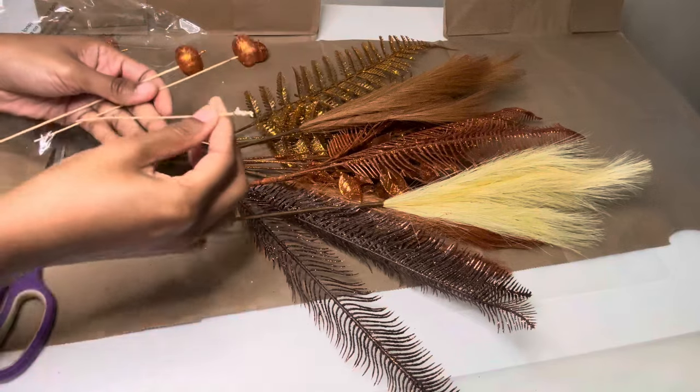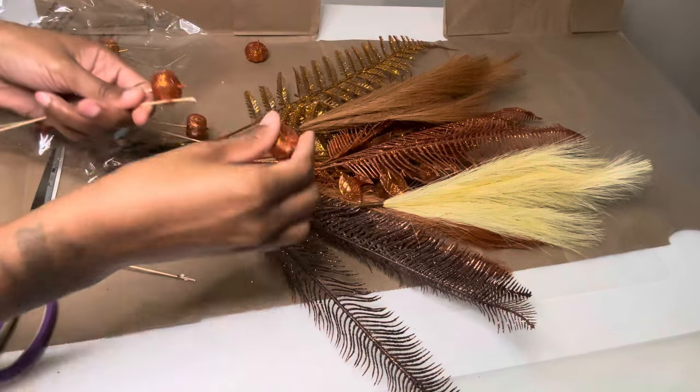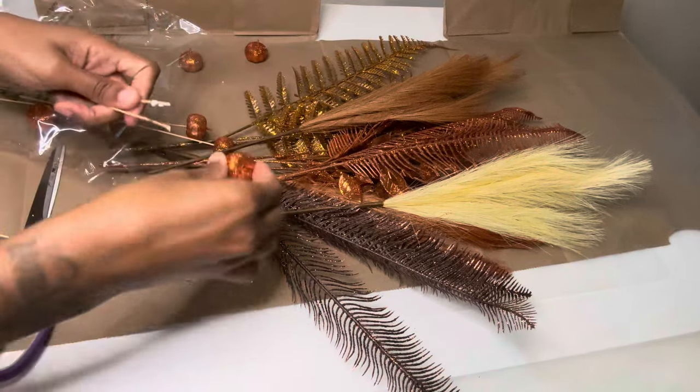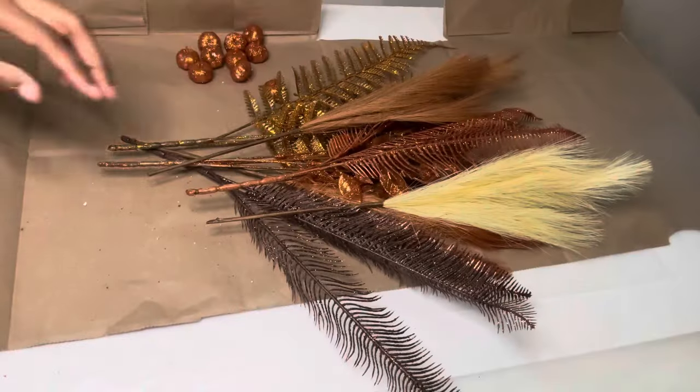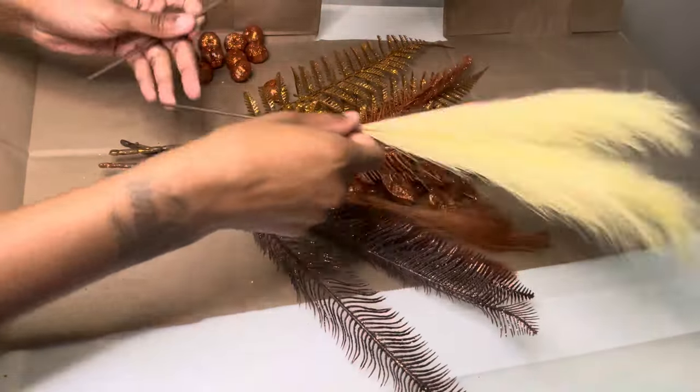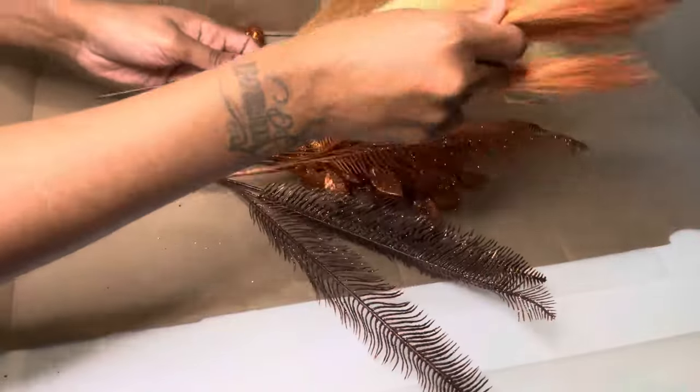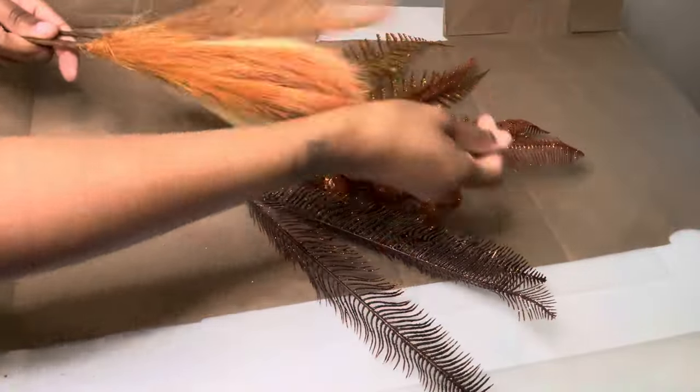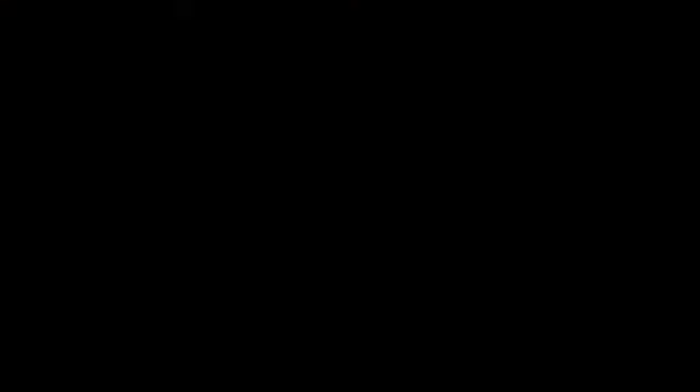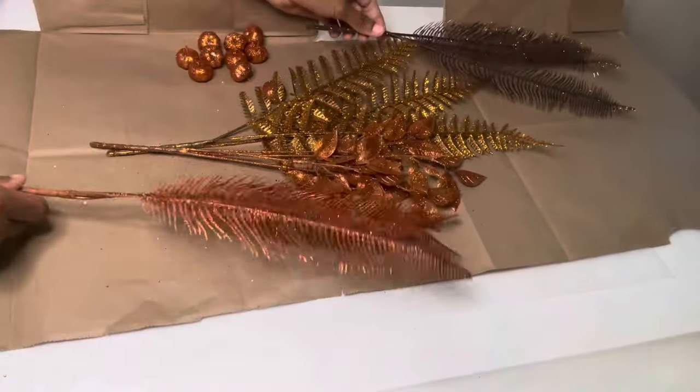I don't know if y'all can tell but there is a bunch of glitter fallout from my flowers and my pumpkins. So I'm just going to remove the flowers that don't have the glitter. Then I'm going to spray some hairspray on my flowers and my pumpkins so that way it can minimize the fallout.